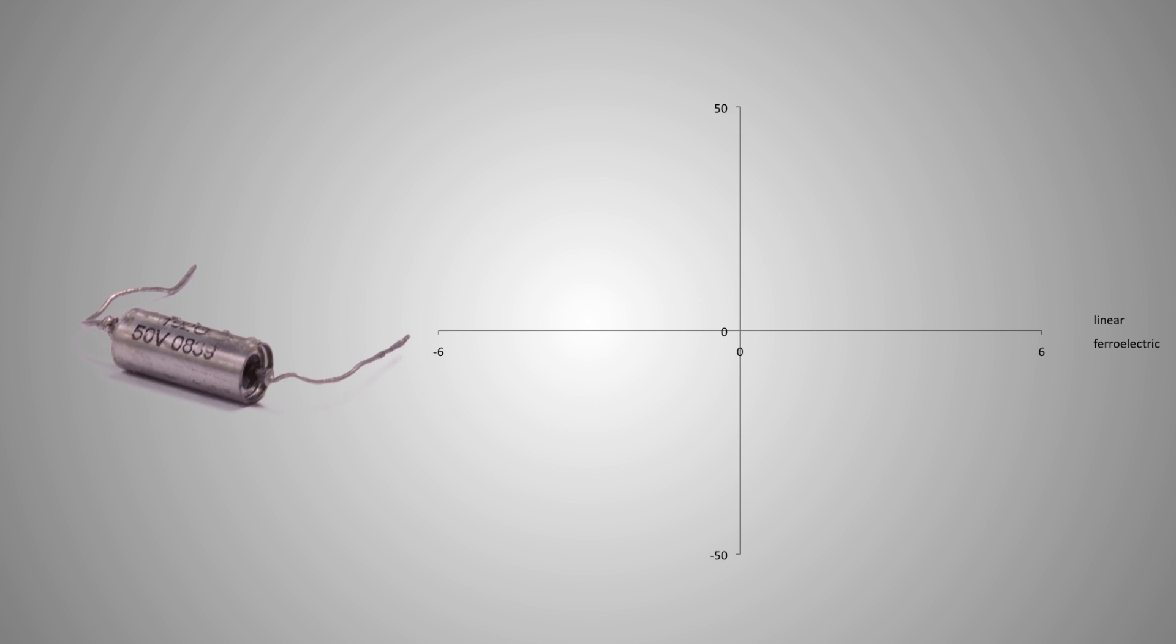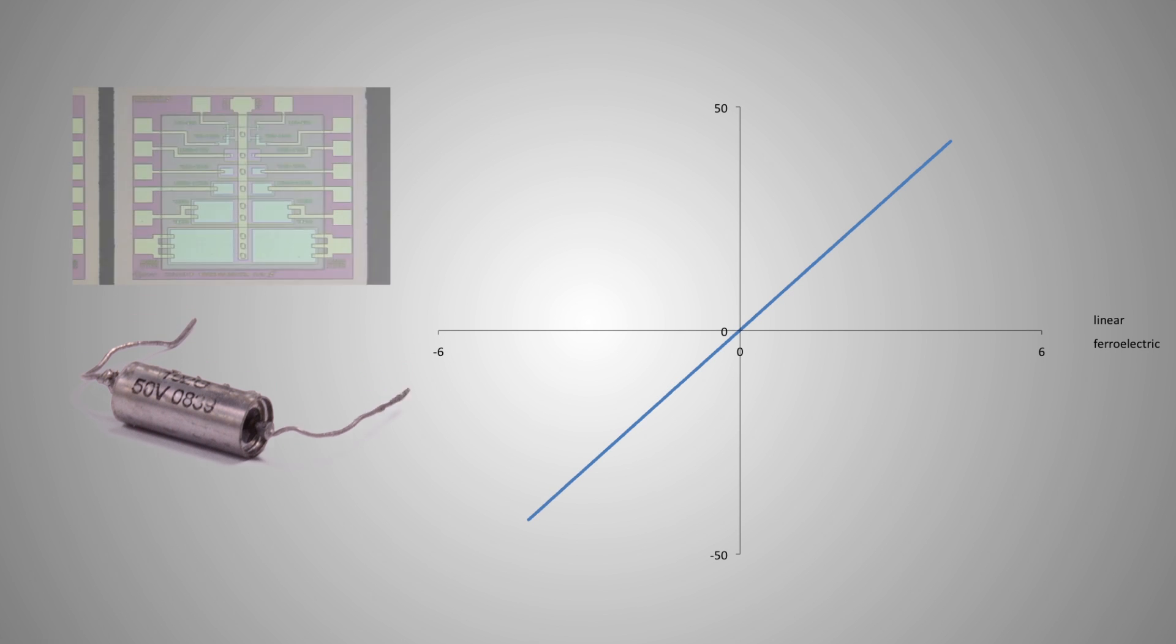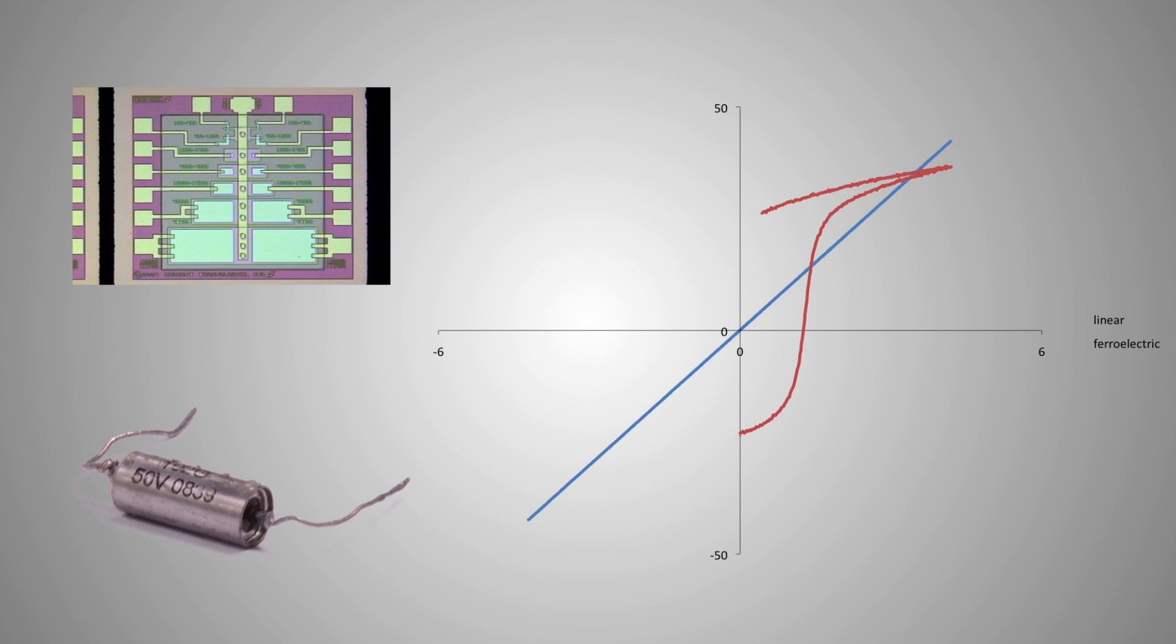A real-world capacitor made with polystyrene between the plates is shown on the left. Its plot is on the right. It is nearly a perfect linear capacitor, so it shows a straight-line trace on the plot. A capacitor made with lead zirconate titanate ceramic between the plates, however, yields a completely different plot.